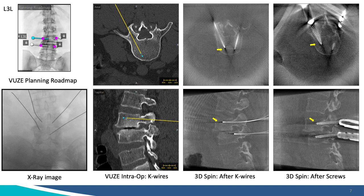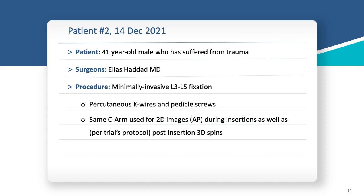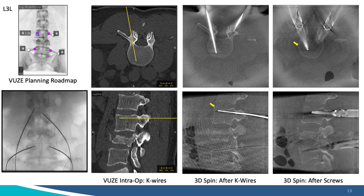Immediately after taking two AP images, we can see simulated trajectories of our Jamshidi in both axial and sagittal views — just based on two AP images, which to me is still magic. For the purpose of the trial, we immediately did a 3D spin to verify the K-wire location, which we inserted through the Jamshidi needle, is exactly as simulated by the system — and it is exactly the same. Then we insert the screws and do another 3D spin. The 3D verification will later be optional, not required.